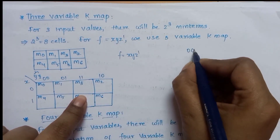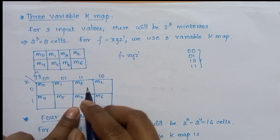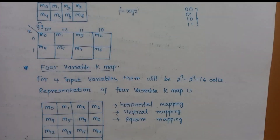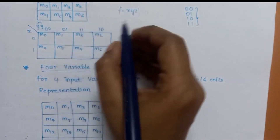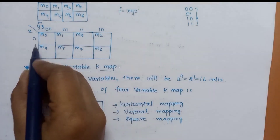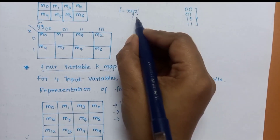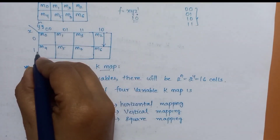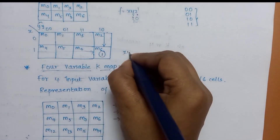We represent the values in the K-map. For F equal to xyz': x equals 1 selects that row, y equals 1 and z equals 0 selects the column — so we place a 1 in that cell. Next example: F equal to x'y'z. Here x' means x equals 0, so we use the first row. y' equals 0 and z equals 1, so yz equals 01 — we mark that cell.